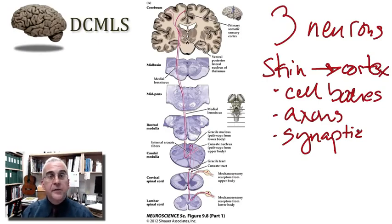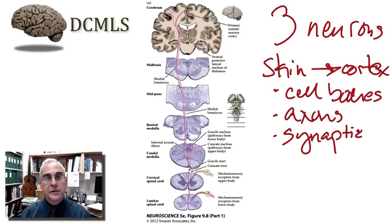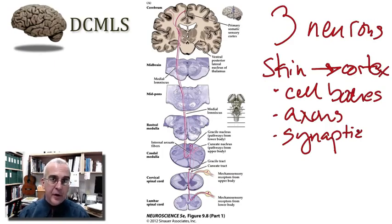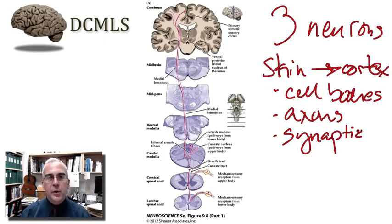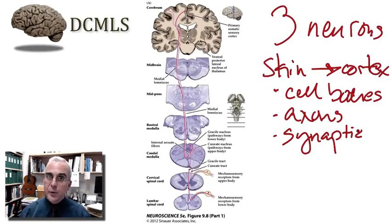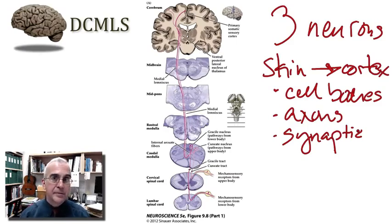Where would we find cell bodies? Somewhere in gray matter within the central nervous system, or perhaps in a ganglion if we're talking about something outside of the central nervous system. Where would we find axons? In the central nervous system, we'd find axons in white matter, and for the peripheral nervous system we'd find axons in nerves. What about synapses? Synapses are the output zone of one neuron but also the input zone of another, so we would find synapses in gray matter.